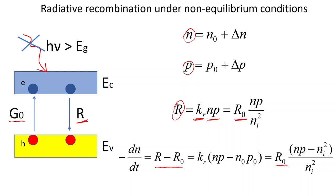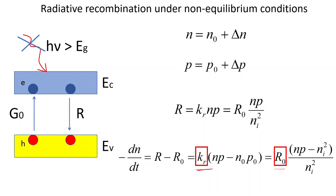Our goal is now a quantitative description of the recombination coefficient Kr and the net recombination rate for radiative bimolecular recombination. A student asks about the minus sign—the derivative is negative because this is recombination, meaning we are reducing charge carrier concentration. That is why we put this minus to highlight the reduction.